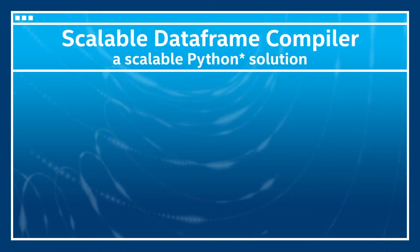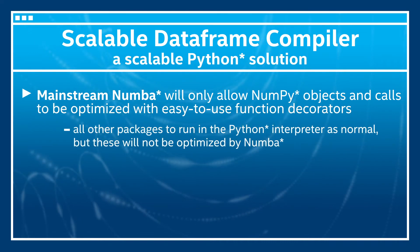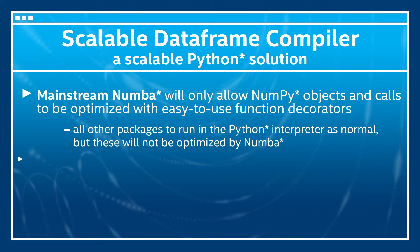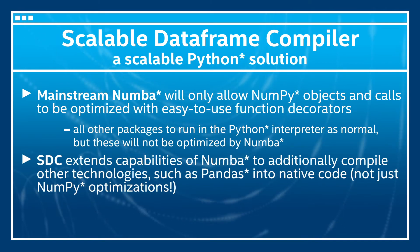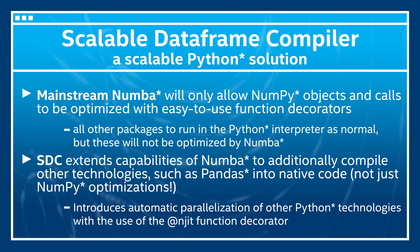Currently, the mainstream Numba compiler only optimizes NumPy arrays, functions, and loops. It optimizes NumPy API with its easy-to-use function decorators by compiling machine code just in time to subsequently execute part or all of your code at native code speeds. The Scalable DataFrame Compiler extends the capabilities of Numba to additionally compile other types of Python technology, such as Pandas, into native code. This way, you can optimize your Python workflows with automatic parallelization by using easy-to-use function decorators.